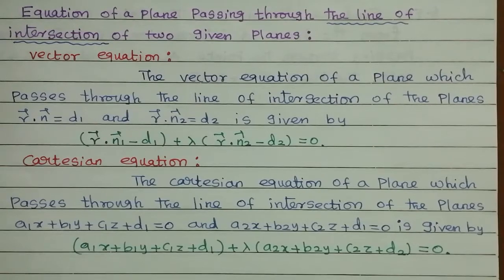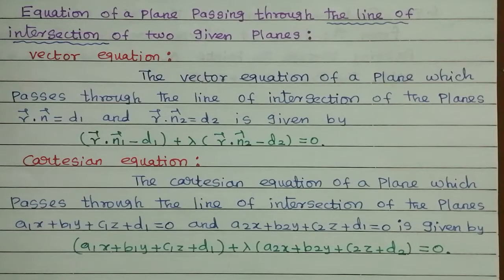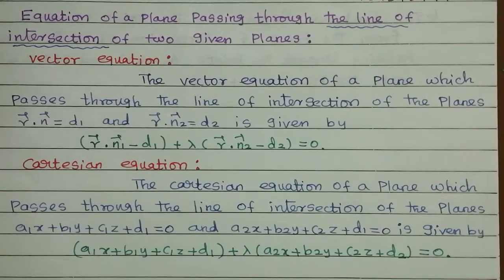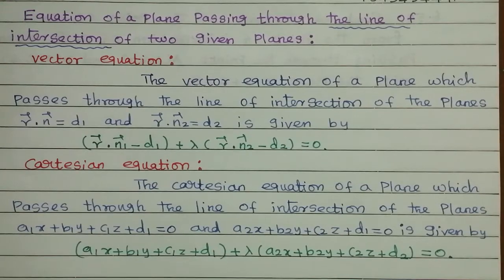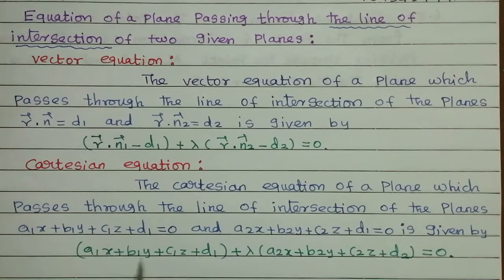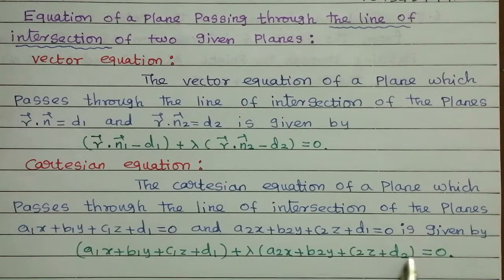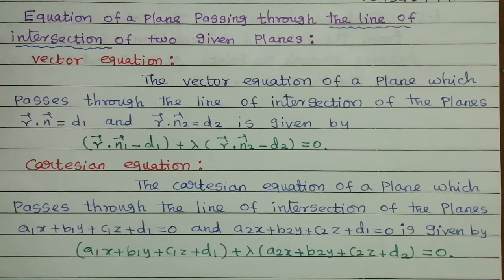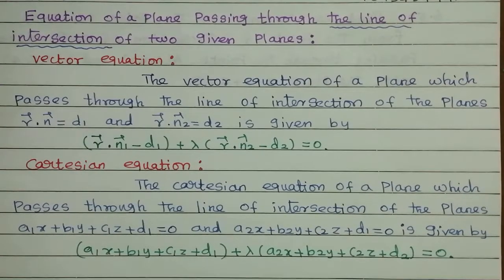Cartesian formula. Equation of the plane passing through the line of intersection of two given planes — Cartesian formula. First plane: a1x plus b1y plus c1z plus d1 equal to 0. Second plane: a2x plus b2y plus c2z plus d2 equal to 0. So the combined equation is: a1x plus b1y plus c1z plus d1, plus lambda into a2x plus b2y plus c2z plus d2, equal to 0.